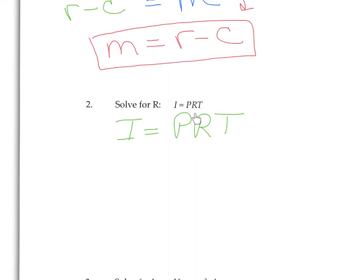To isolate this R, we undo this P and this T. And the operation here is multiply. So to undo it, we divide. Divide off the P. Divide off the T. You can do it all in one step. And they will reduce like that, leaving your R by itself. But of course, anything you do on this side, you also have to do on this side. So we'll divide by P and T.